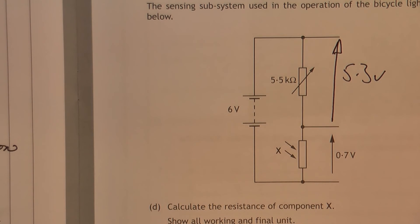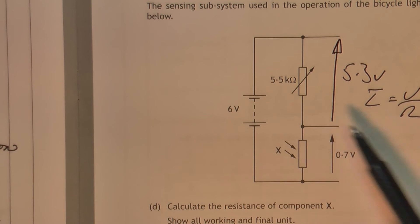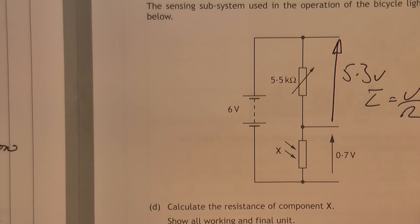Now that we know that's 5.3, up at the top here, we know the voltage and the resistance, so we can calculate the current. And that will be in milliamps, because that's in kilohms. If the resistance is in kilohms, the answer's in milliamps. If the resistance is in ohms, the answer's in amps.